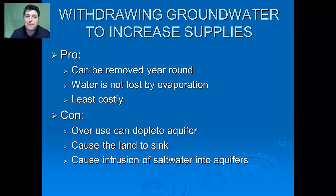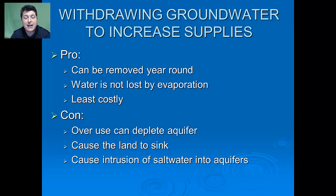Unfortunately, there are many negatives. If you overdraft water from the ground, it can actually deplete the aquifer. If we pump it faster than water comes back in, it could lead to sinkholes and ground subsidence. Additionally, if we're pumping groundwater near the coastline, we can actually draw salt water into the groundwater — causing what's called saltwater intrusion.